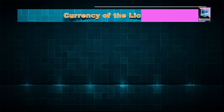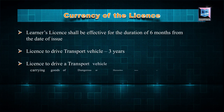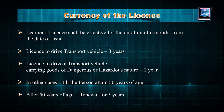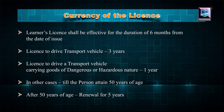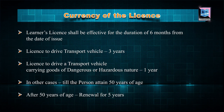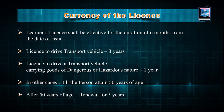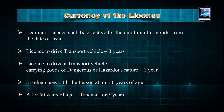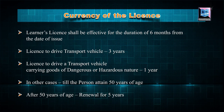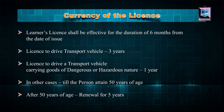A learner's license shall be effective for a duration of 6 months from the date of issue. Likewise, the license to drive a transport vehicle shall have a life of 3 years, after which it must be renewed. A license to drive a transport vehicle carrying goods of a dangerous or hazardous nature has a duration of 1 year.